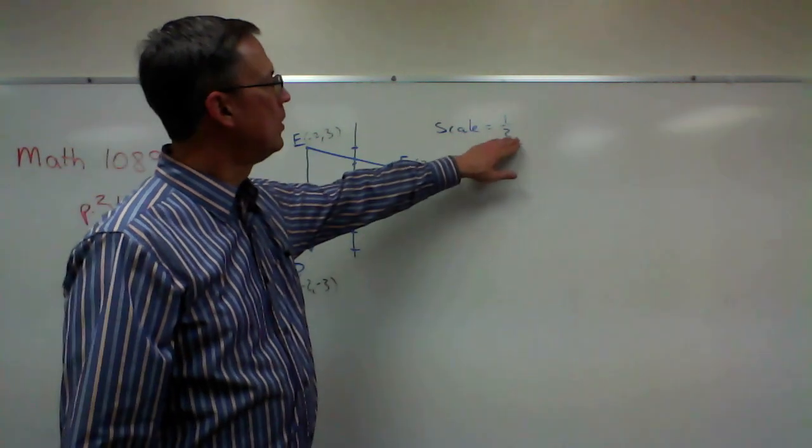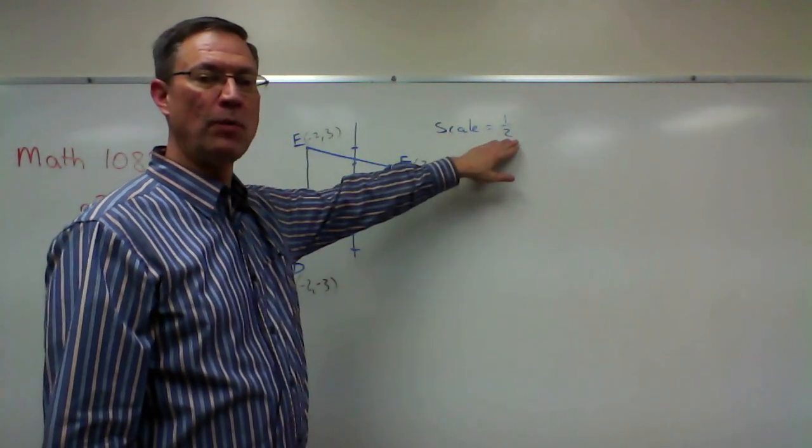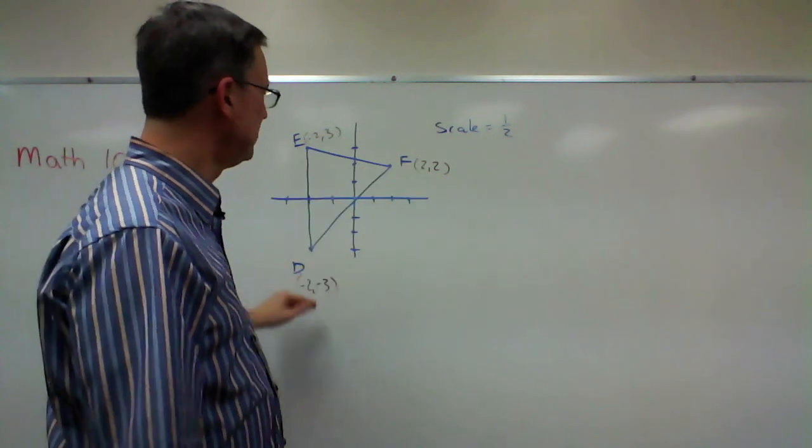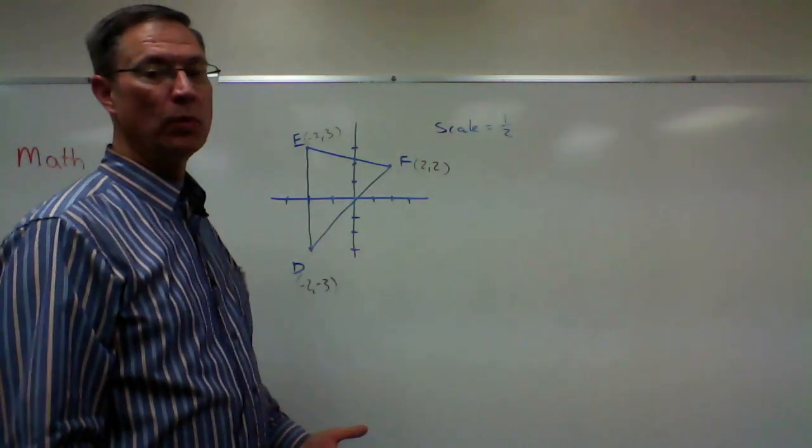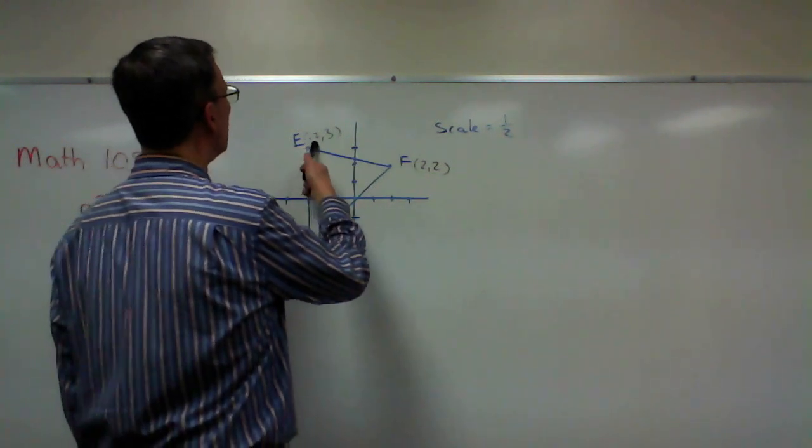So what we're going to do now is take the scale factor of one half and multiply all six of these numbers by one half, and then figure out where to graph that.